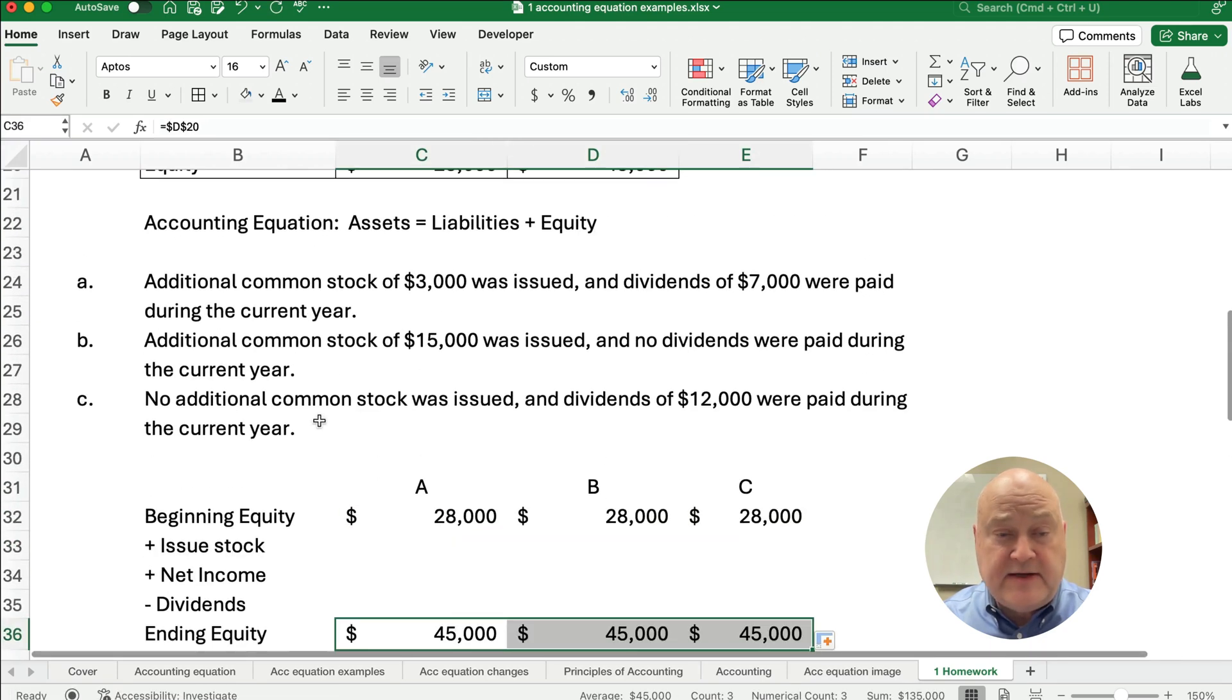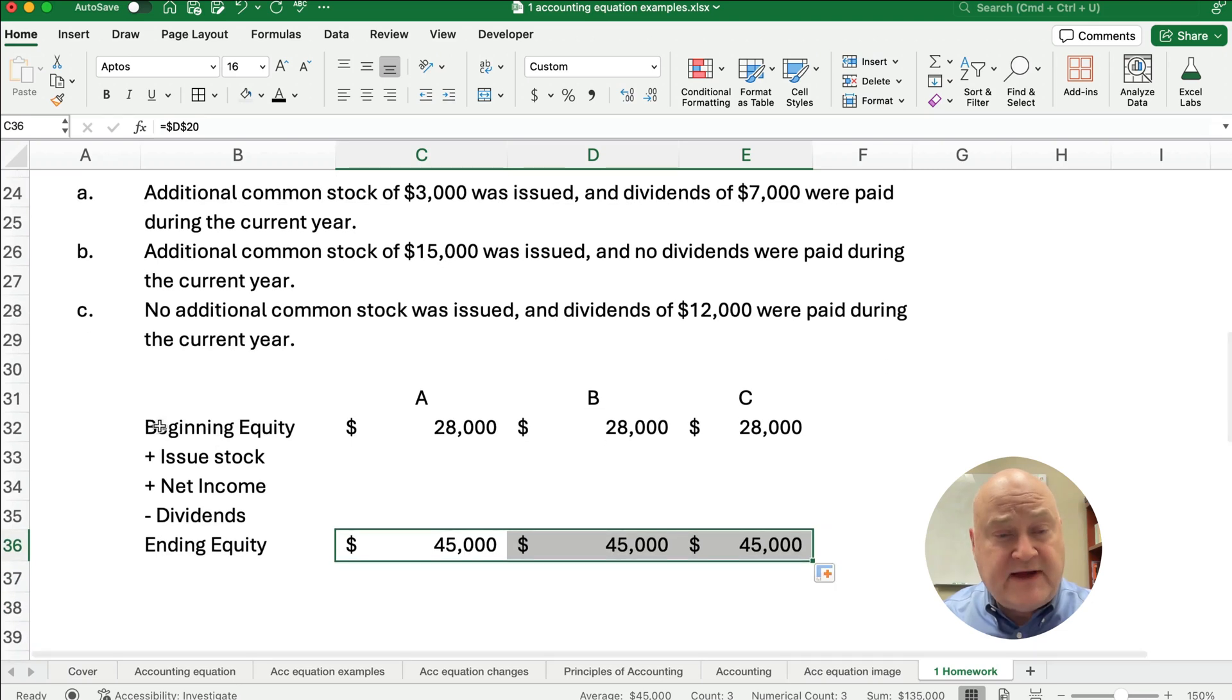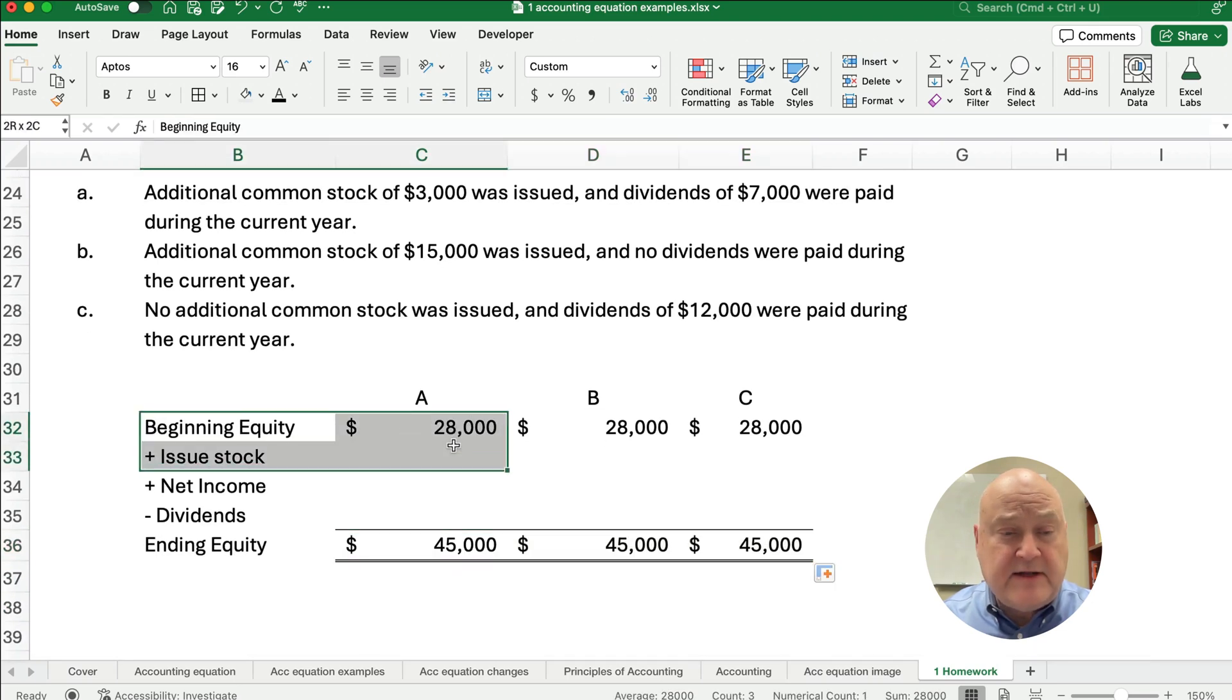Alright, so now what we need to do is we have a setup that says, look, beginning equity plus issuing common stock or additional investment plus net income minus dividends is going to give us ending equity.